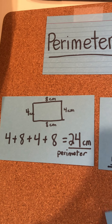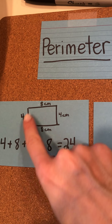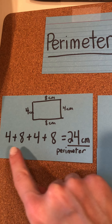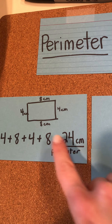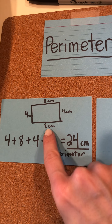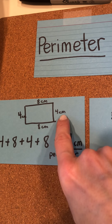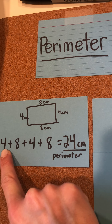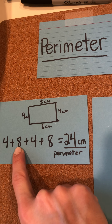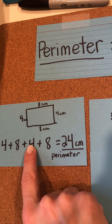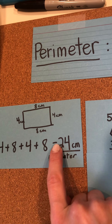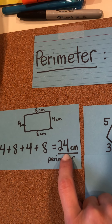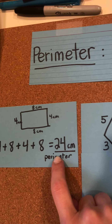Here's an example. We have this figure. If we want to find the perimeter, we're going to add side plus side plus side plus side. So it's going to be 4 plus 8 plus 4 plus 8, and that is equal to 24 centimeters, which is the perimeter.